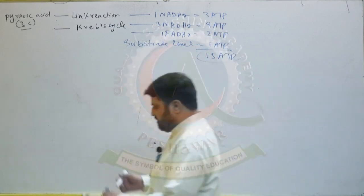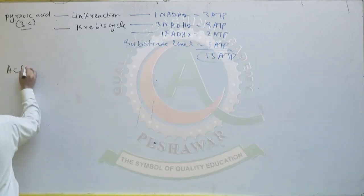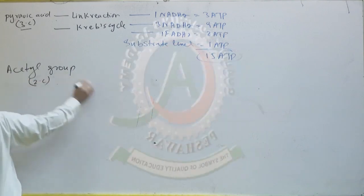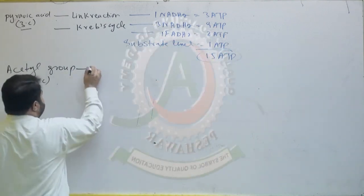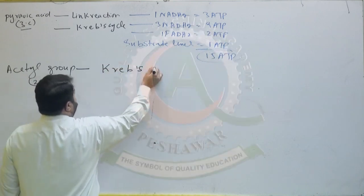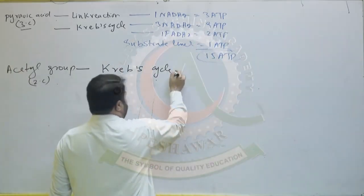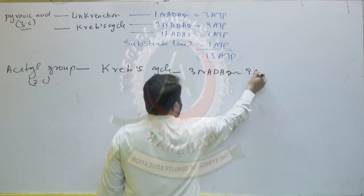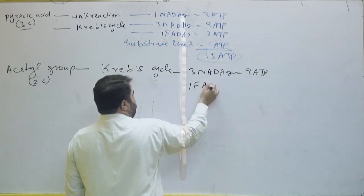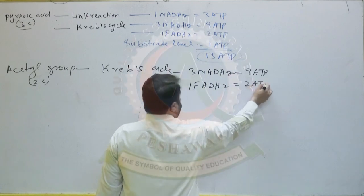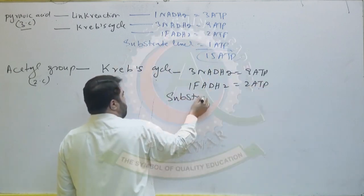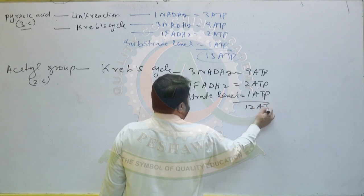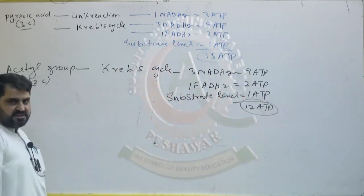If someone asks how many ATP are produced from an acetyl group — the acetyl group is a two-carbon compound. We calculate its ATP directly in the Krebs cycle. In one Krebs cycle, 3 NADH2 is produced equivalent to nine ATP, one FAD is produced equivalent to two ATP, and one ATP is generated at the substrate level. So total 12 ATP is produced, of which 11 are oxidative and one is substrate level.